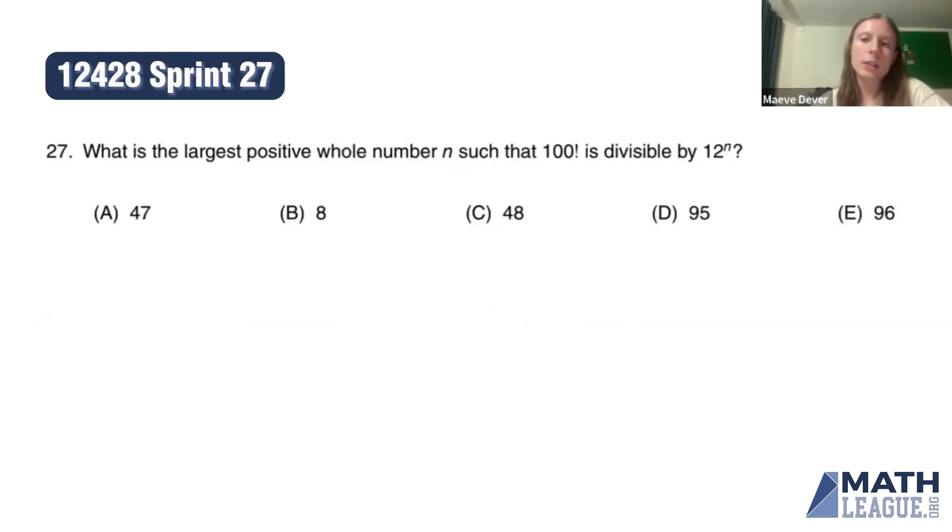But all we can do is think about what it takes to be divisible by 12. If you want to be divisible by 12, you've got to be divisible by 3 and you've got to be divisible by 4 because 12 is 2 times 2 times 3, 4 times 3. And it's not that hard to find out how many times 100 factorial is divisible by 3 and then how many times it's divisible by 4.